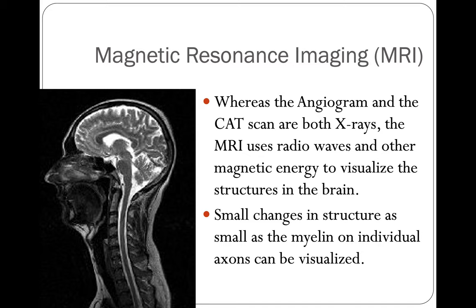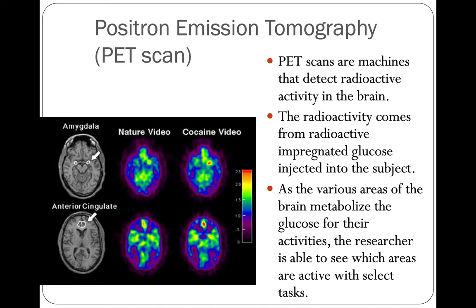Whereas the angiogram and CAT scan are both x-rays, the MRI uses radio waves and other magnetic energy to visualize structures in the brain. Small changes in structure, as small as the myelin on individual axons, can be visualized. PET scans are machines that detect radioactive activity in the brain. The radioactivity comes from radioactive-impregnated glucose injected into the brain — each cell of your body utilizes glucose. So if we inject you with radioactive glucose and then take an image of your brain, we will see the areas of your brain that are most active — the cells utilizing the most glucose.